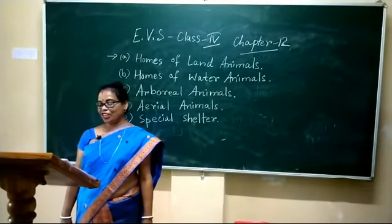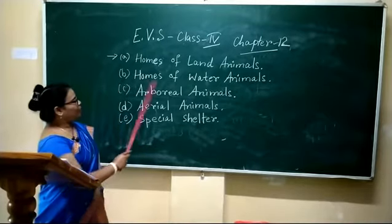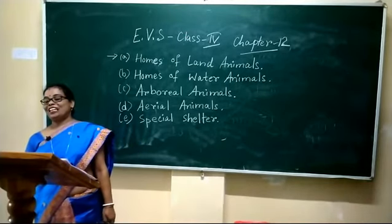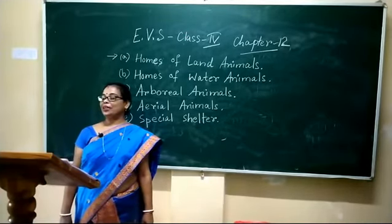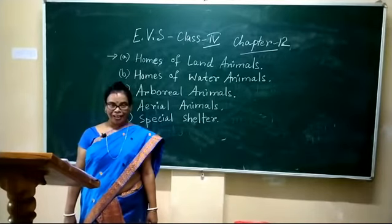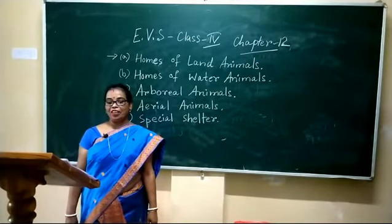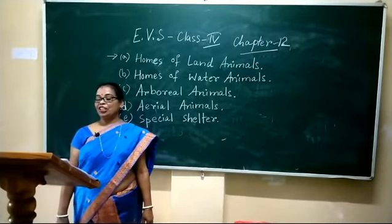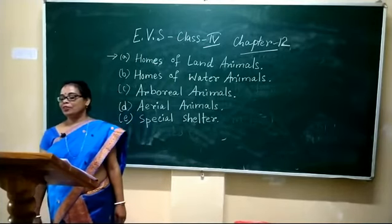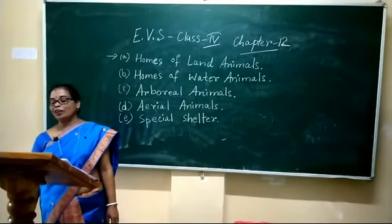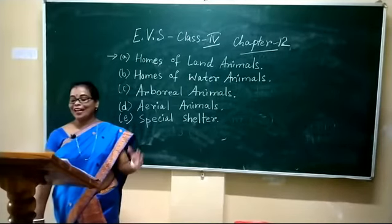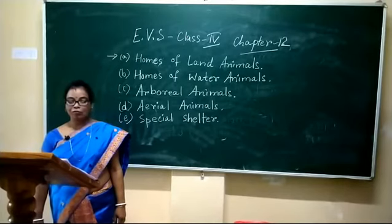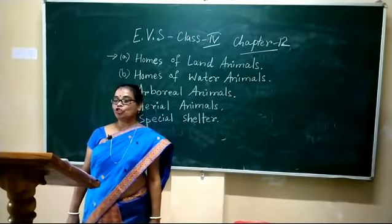Second, we shall learn about the homes of water animals. Some animals can live only in water; such animals are called aquatic animals. Animals like fish, sharks, octopus, starfish, etc. live in water. Again, some animals are called amphibians — they live both on land and in water. Examples are frogs, crocodiles, crabs, and turtles.